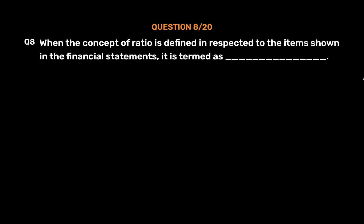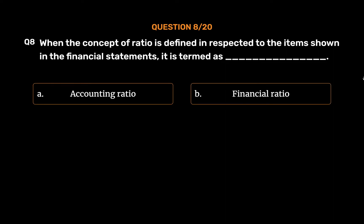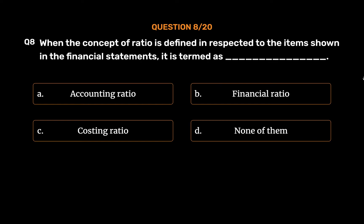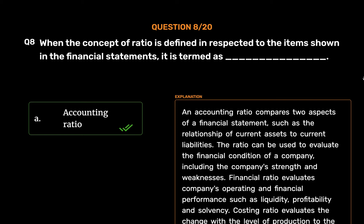Question number 8. When the concept of ratio is defined with respect to items shown in the financial statements, it is termed as: Option A: Accounting Ratio. Option B: Financial Ratio. Option C: Costing Ratio. Option D: None of them. The correct answer is Option A: Accounting Ratio. An accounting ratio compares two aspects of a financial statement, such as current assets to current liabilities. Financial Ratio evaluates a company's operating and financial performance such as liquidity, profitability, and solvency. Costing Ratio evaluates the change in the level of production relative to revenues generated.